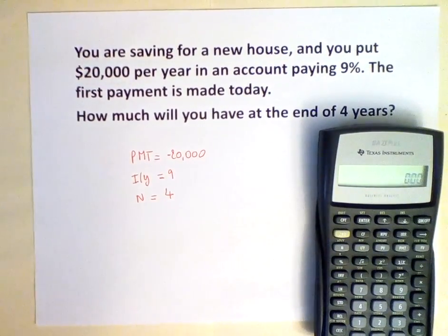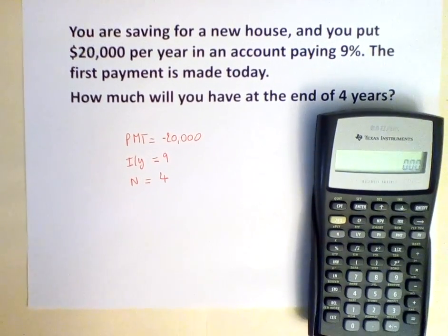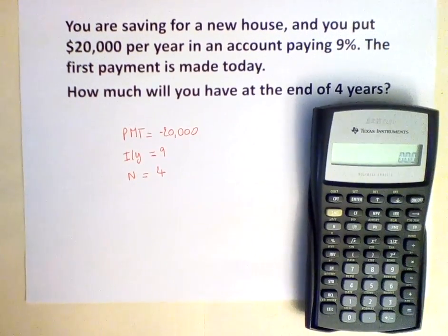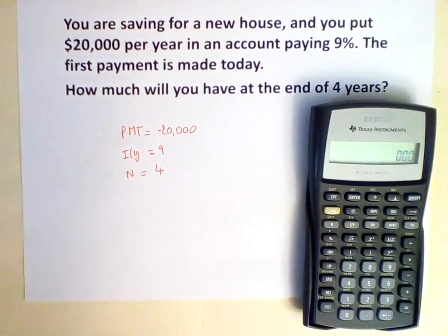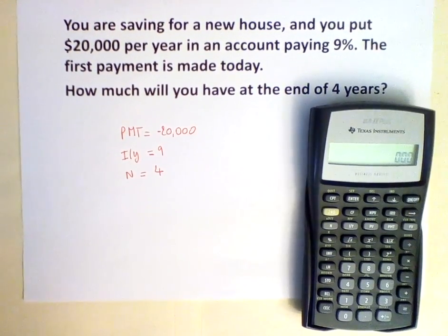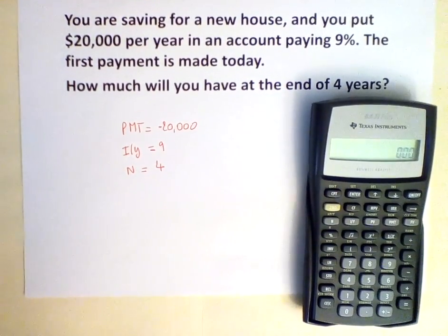The payment is made today, so the next payment will be made at the beginning of year 1, and the following payment will be at the beginning of year 2, and so on. Given that the payments are made at the beginning of each period, this is an annuity due.